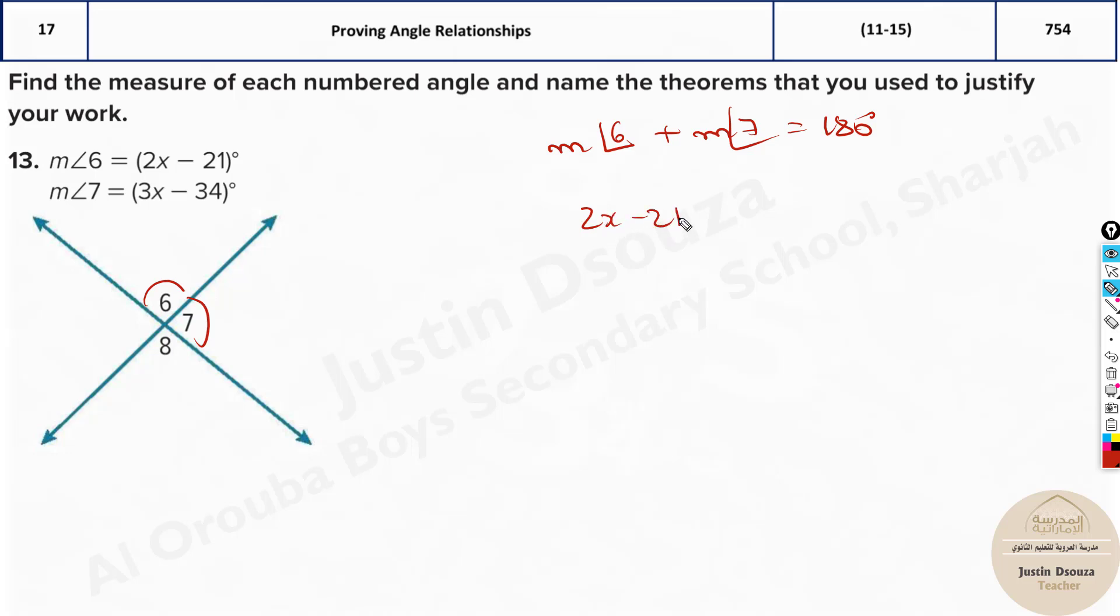So we know measure of 6 plus measure of 7 will be equal to 180 degrees. Now it's 2x minus 21 plus 3x minus 34, that is equal to 180 degrees. Now you solve it up: 5x is equal to 180 plus, because this goes to the other side, it adds up. We can add this, it's 55, and this is going to be 235. 5x divided by 5 over here, it'll be 47.